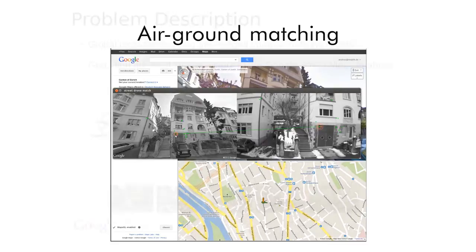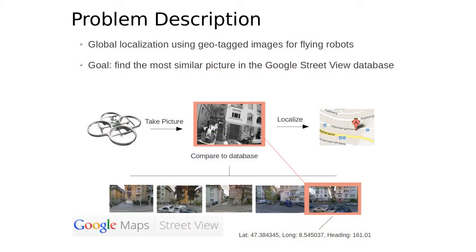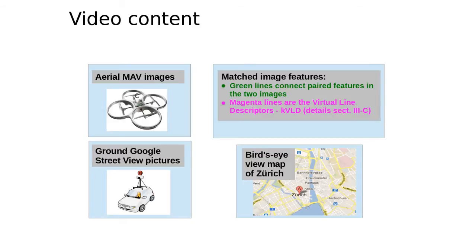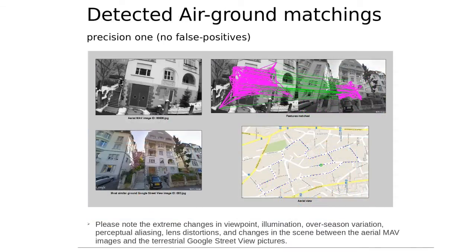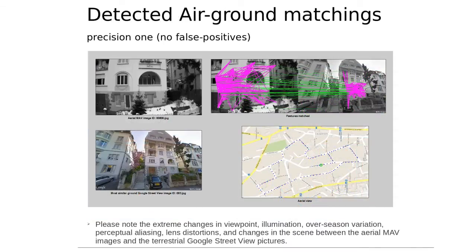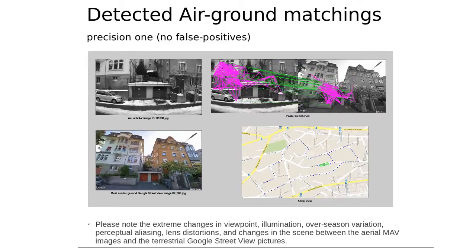In order to avoid the caveats of state-of-the-art image search algorithms in case of severe viewpoint changes between the query and the database images, we propose to generate virtual views of the scene, which exploit the air-ground geometry of the system. To limit the computational complexity of the algorithm, we rely on a histogram voting scheme to select the best putative image correspondences.